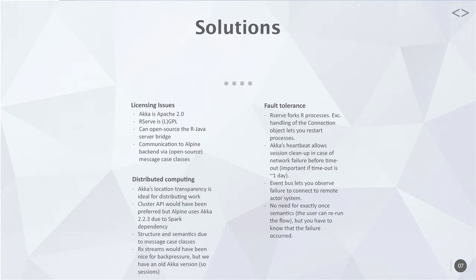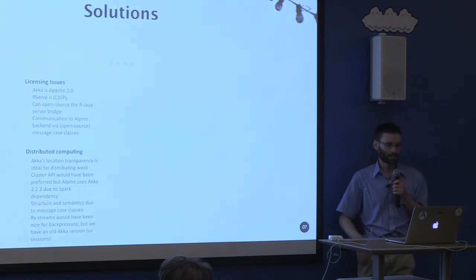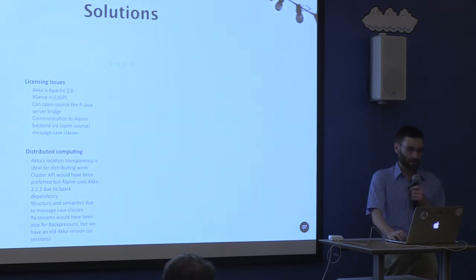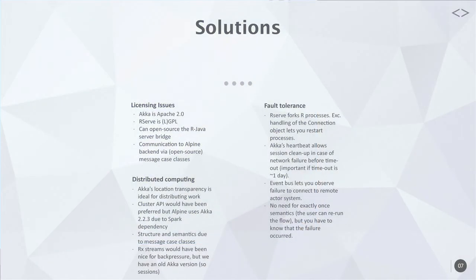From a distributed computing perspective, Akka provides location transparency — you don't have to think about whether you're doing Java util concurrent, RMI, spring remoting, or REST. The cluster API would have been really nice, but we're using an old version of Akka. You can provide structure and semantics by having specific messages for specific problems. Reactive streams or back pressure would have been nice, but we have an old Akka version, so we have to deal with that ourselves.